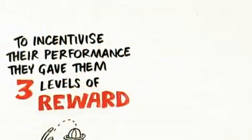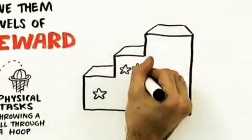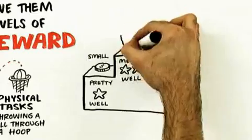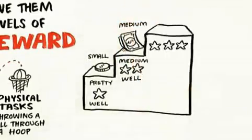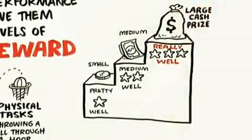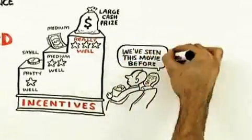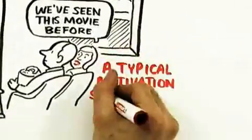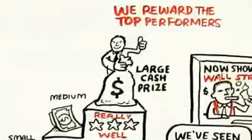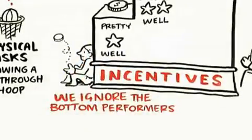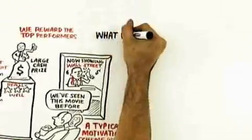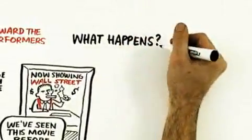If you did pretty well you got a small monetary reward, if you did medium well you got a medium monetary reward, and if you did really well, if you were one of the top performers, you got a large cash prize. We've seen this movie before - this is essentially a typical motivation scheme within organizations. We reward the very top performers, we ignore the low performers, and the other folks are kind of in the middle.